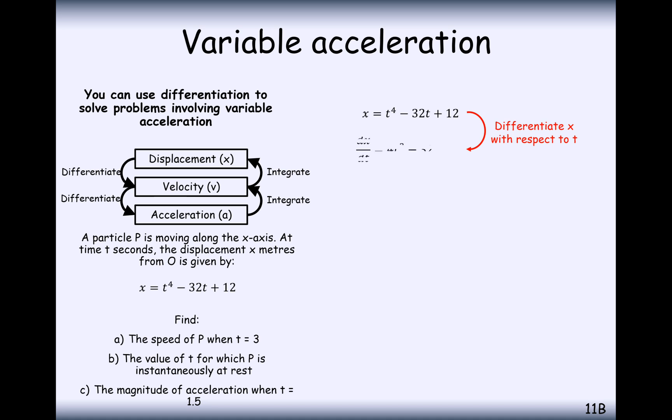Differentiate to find velocity and remember we times the front by the number and reduce the power by 1. So 4t cubed and then when it's minus 32t then it's just minus 32 and remember the number disappears. We can also write here that this is v equals 4t cubed minus 32. So finding the speed of P when t equals 3, we just substitute in 3 and we get 76.